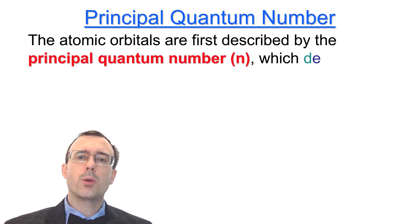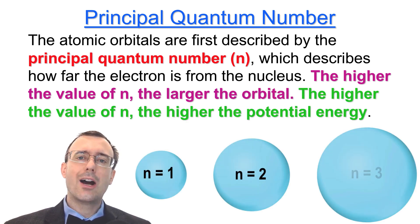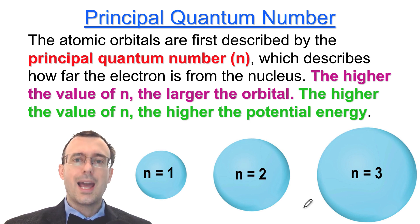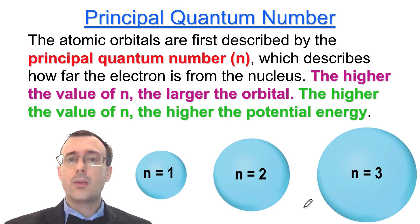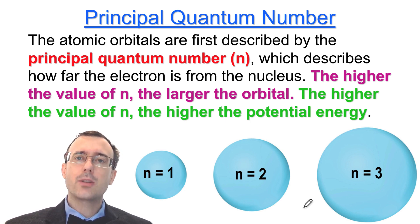Atomic orbitals are first described by the principal quantum number n, which describes how far the electron is from the nucleus — basically, n tells you how big the atomic orbital is. The higher the value of n, the larger the orbital. Looking at pictures of n=1, n=2, and n=3, you can see the bigger the value of n, the bigger the atomic orbital and the further, on average, the electron is from the nucleus. The higher the value of n, the higher the potential energy of the electron, because electrons are negative and want to be close to the positively charged nucleus. The closer they are, the lower their potential energy, and electrons want to go down in potential energy.